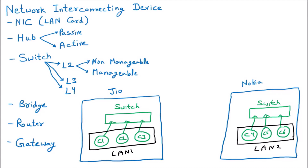Now what we want is communication between these two companies. So to connect these two companies — or we can say two LANs — we need some device. We can also use a bridge if we want, but let us take one more device and give it the name gateway. The purpose of this gateway is to connect LANs, so gateway is the LAN interconnecting device.